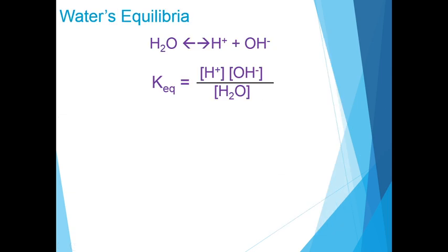Because reversible ionization is crucial to the role of water in cellular function, we must have a means of expressing the extent of ionization of water in quantitative terms. Water ionization can be expressed as H₂O giving H⁺ plus OH⁻, and the equilibrium constant can be written as the concentration of products over reactants — in this case, the concentration of proton and hydroxide ion over the concentration of water.